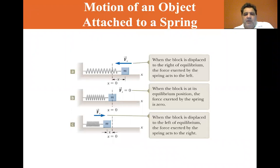Let's look at when the block is displaced to the right of equilibrium, the force exerted by the spring acts to the left. When the block is at its equilibrium position, the force exerted by the spring is zero. When the block is displaced to the left of equilibrium, the force exerted by the spring acts to the right.